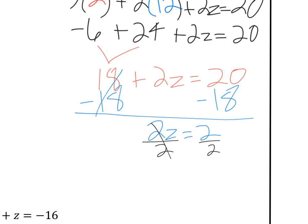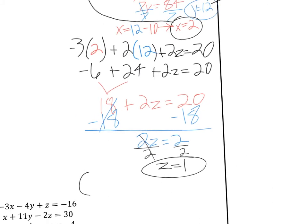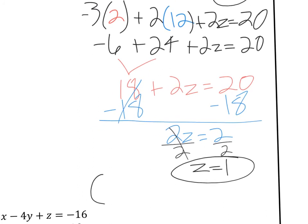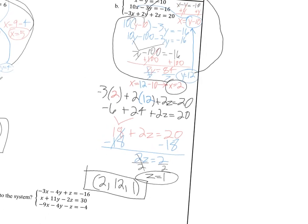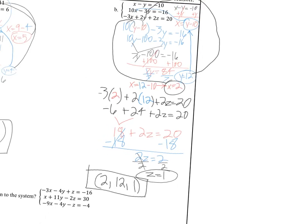So now you have your x, y, and z answer. So you're ready to write your ordered triple. My ordered triple would be x was 2, y was 12, z was 1. Box it up because that's the final answer. Okay. So let's move on to example 3, or I guess letter C.